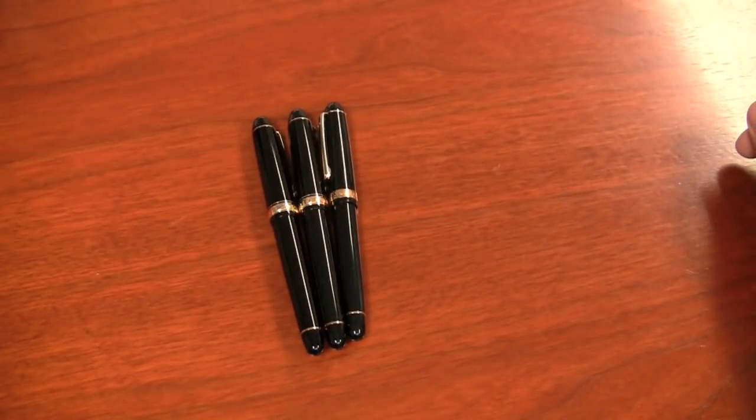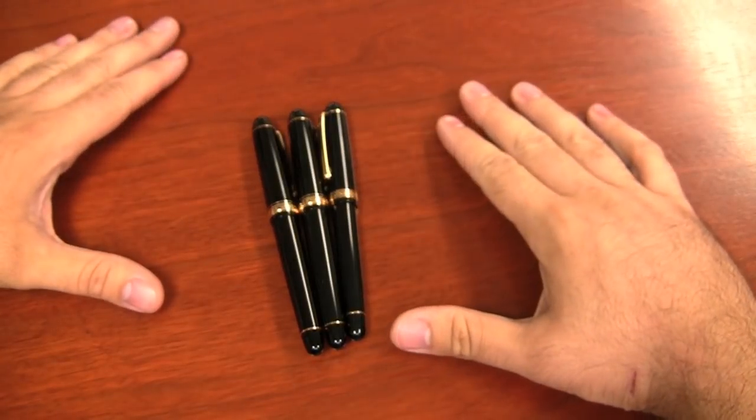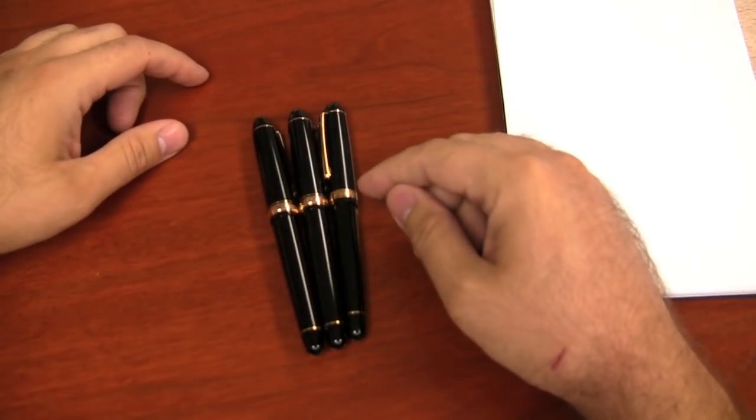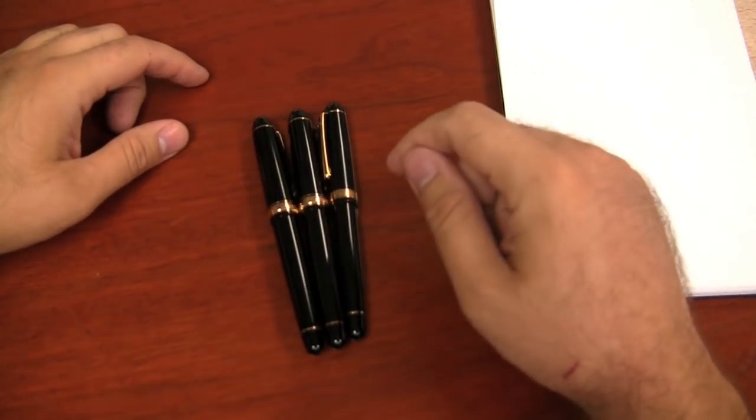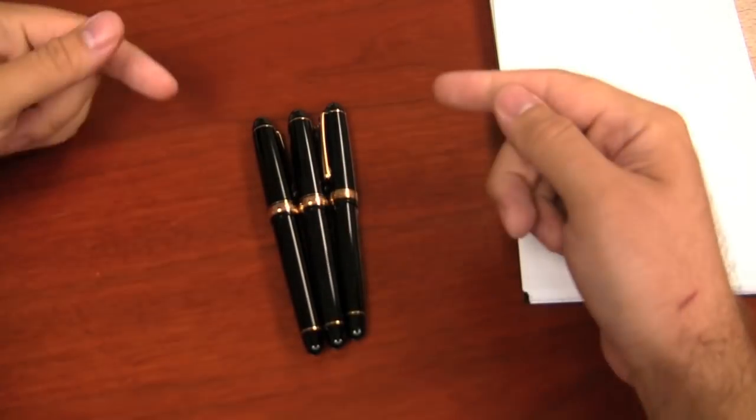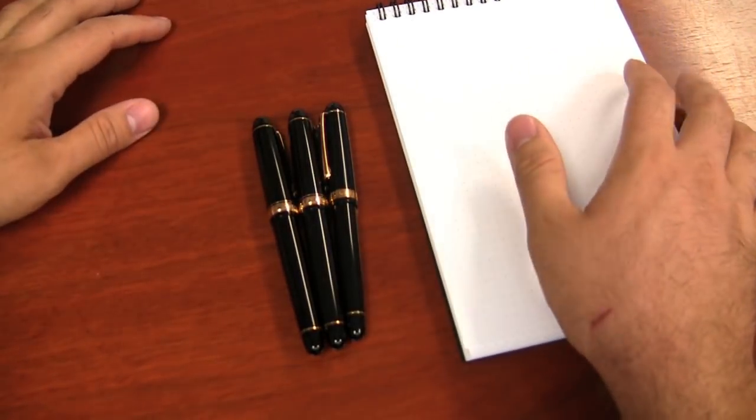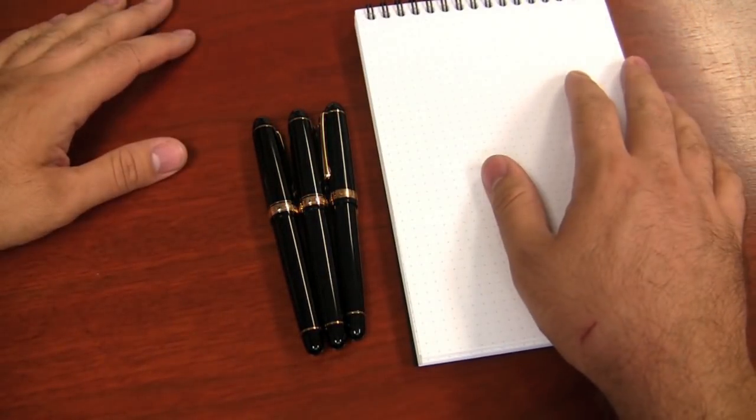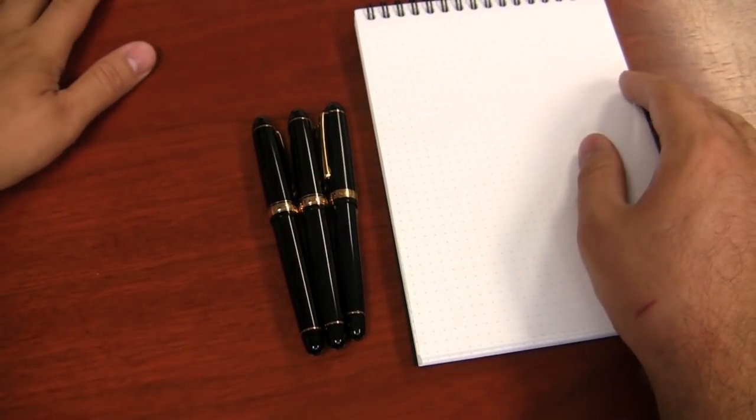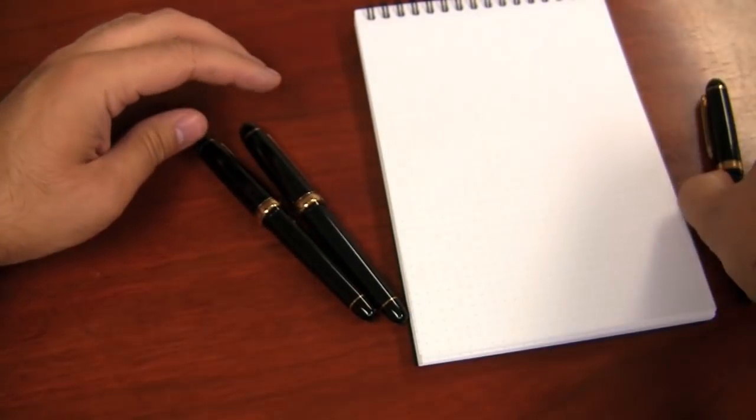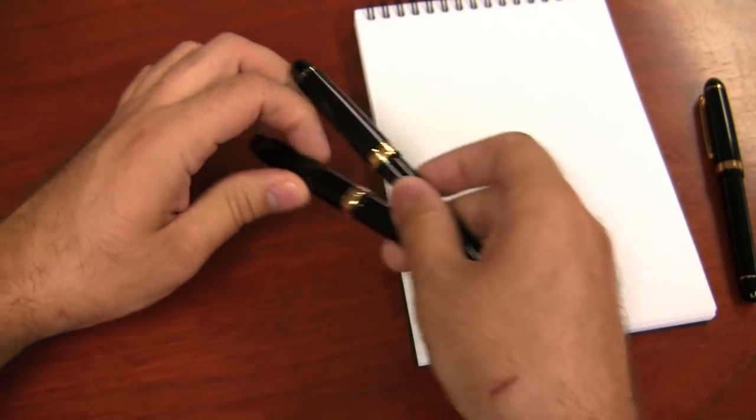I have with me right here three Platinum 3776s. I have one of the original models here, and then these two are called the Black Century. They're newly redesigned with a cap sealing design in them so that they won't dry out for Platinum claims a year or more. So that is pretty cool. But that's not really the focus of the video today.